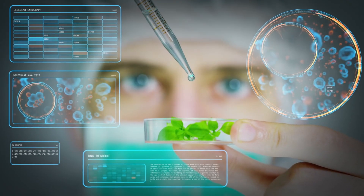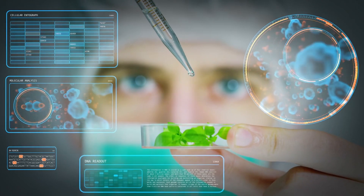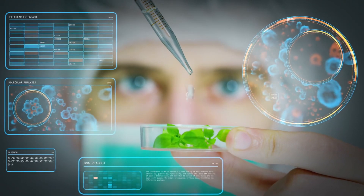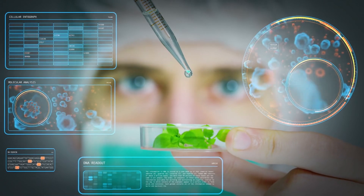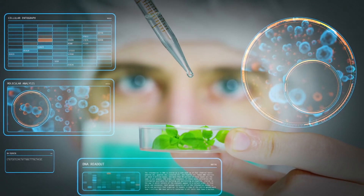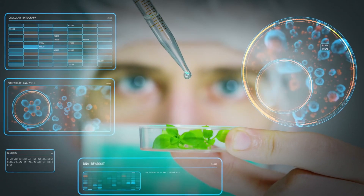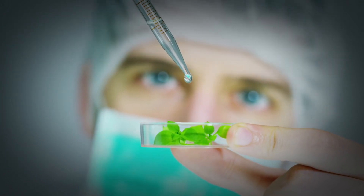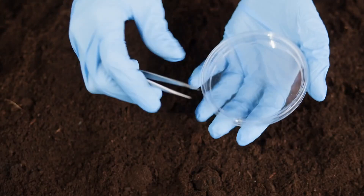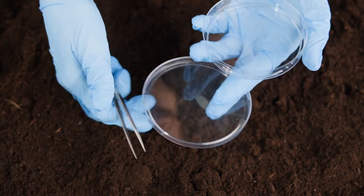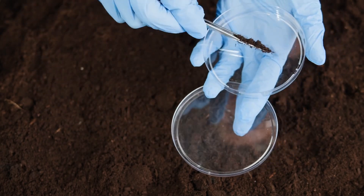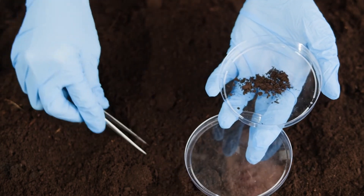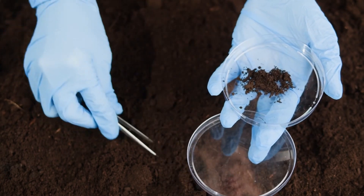Soil analysis. Once collected, the soil samples undergo analysis in a forensic laboratory. Different techniques are used to examine the physical, chemical and biological properties of the soil. This analysis can provide information about the soil composition, texture, colour, moisture content and the presence of any foreign substances.